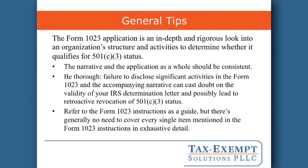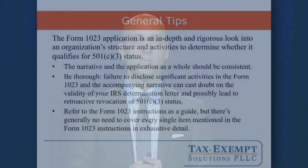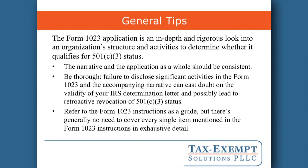The Form 1023 application is an in-depth and rigorous look into an organization's structure and activities to determine whether it qualifies for 501c3 status. Note that there is now another way to apply for 501c3 status if you're a small organization — this is called the Form 1023EZ. The 1023EZ doesn't require a narrative, doesn't require supporting documents, and is a much easier form. But if you don't qualify to use the Form 1023EZ or decide not to use it for strategic purposes, this webinar is for you.